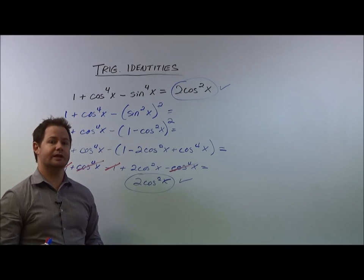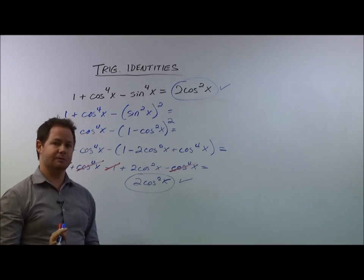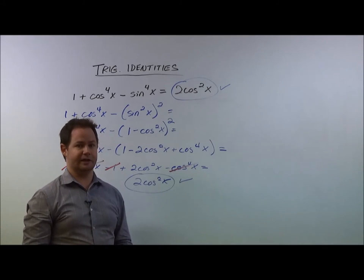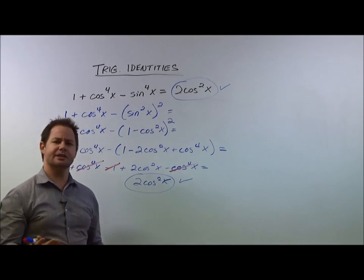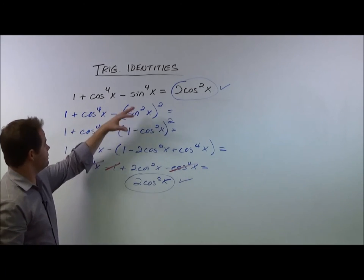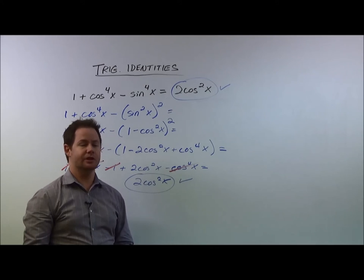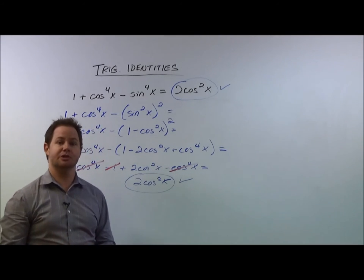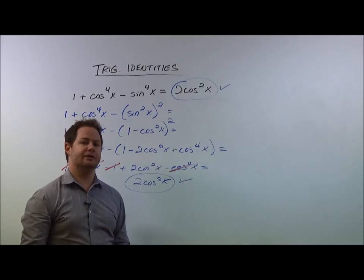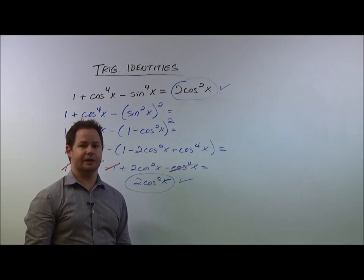So when using trig identities to prove the equivalence of two expressions, it's really important to, A, make sure you know all the trig identities. B, make sure you're very careful with the algebra. And C, the good news is that as soon as you see something, there's not always just one path to arriving at the correct answer. So if you approach this a different way and got the same thing, then you're in good shape. It just means you understand algebra well and that you know your identities well. For more, please feel free to take a look at our other videos. And thanks for watching.